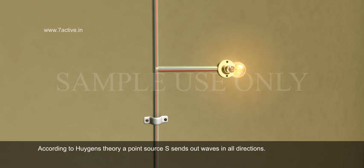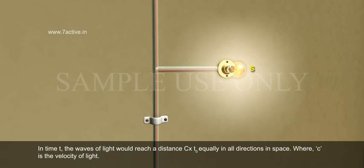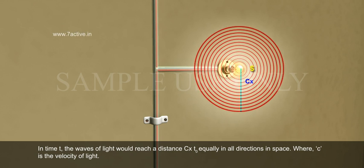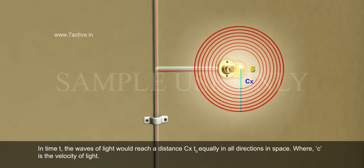a point source S sends out waves in all directions. In time t, the waves of light would reach a distance ct equally in all directions in space,